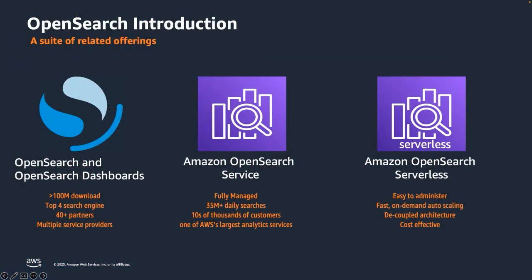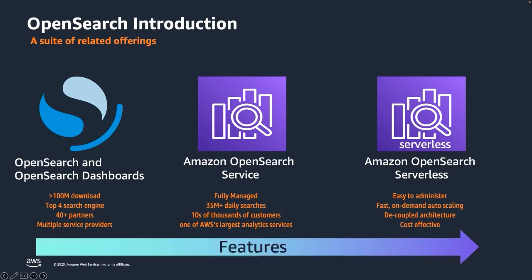A quick introduction to OpenSearch. OpenSearch comes in three flavors. The open source OpenSearch is a community driven open source full text search engine built on top of Apache Lucene, aiming to provide a scalable, reliable, and customizable search solution. Amazon OpenSearch Service is a fully managed OpenSearch on AWS. The deployment is further simplified with the introduction of Amazon OpenSearch Serverless, which eases cluster administrative tasks and provides a decoupled architecture that supports cost-effective and fast on-demand scaling. New features are first incorporated into the open source OpenSearch via a transparent roadmap and then folded into the service and later into the serverless deployment.